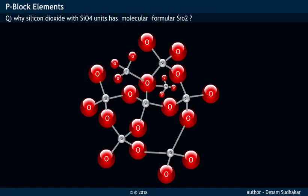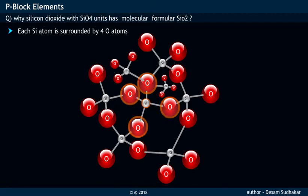Let us explain why silicon dioxide having SiO4 units has a molecular formula of SiO2. From the structure of silica shown, it may be noticed that each silicon atom is surrounded by four oxygen atoms.